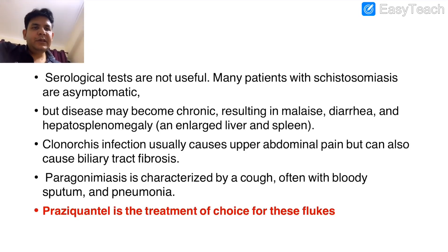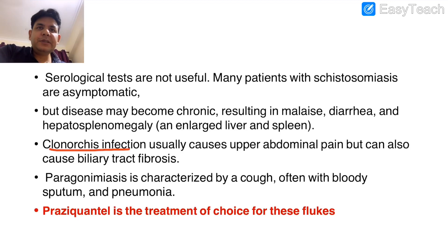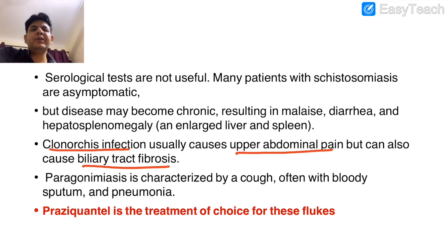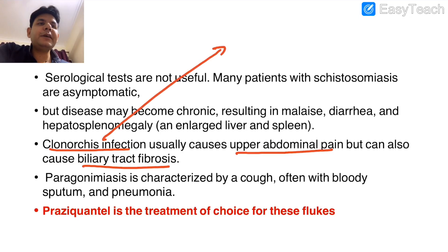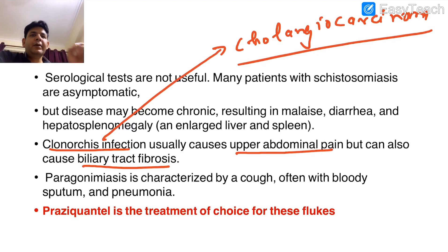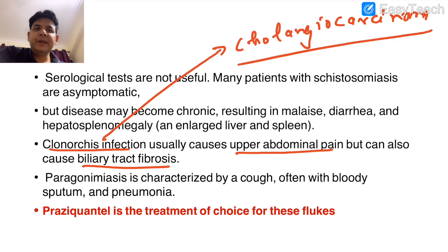Clonorchis sinensis, also termed the Chinese liver fluke or Oriental liver fluke, leads to upper abdominal pain and biliary tract fibrosis. Importantly, it leads to cholangiocarcinoma — a famous surgery exam question about which worm leads to cholangiocarcinoma or biliary carcinoma.